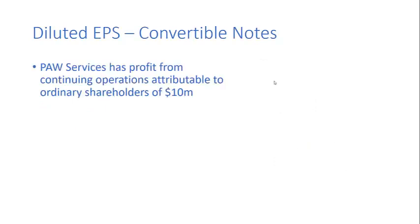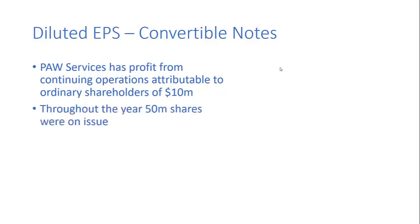So let's get into diluted earnings per share numbers, and the best way of thinking about this is with a simple example. Here we have Poor Services. It has a profit from continuing operations attributable to ordinary shareholders of $10 million per year, and throughout the year 50 million shares were on issue.